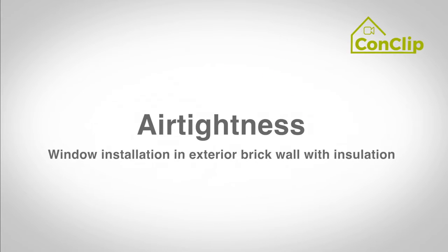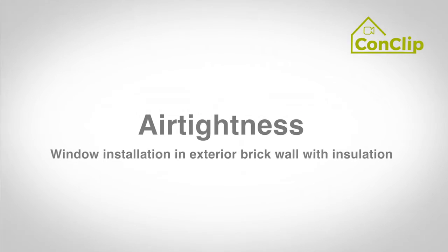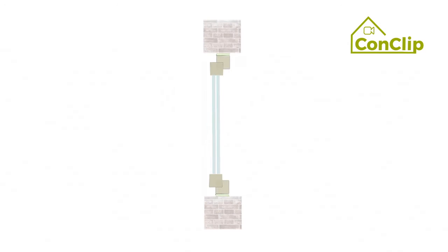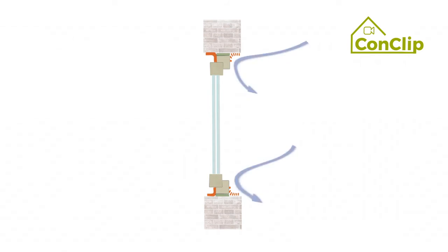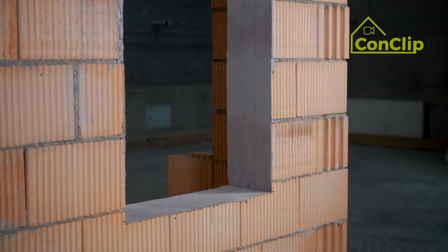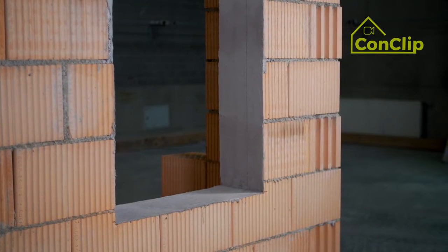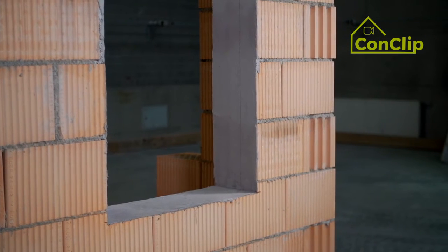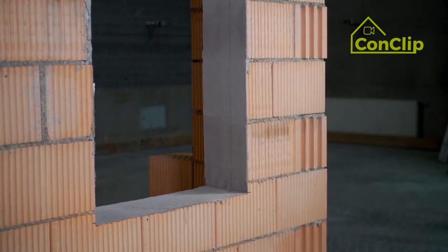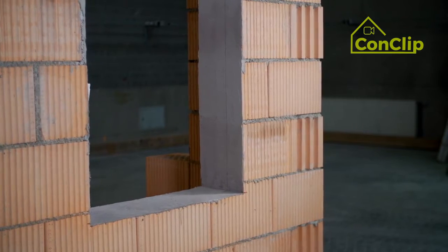Air tightness: window installation in exterior brick wall with insulation. Air tightness means that heated air from inside a building cannot escape and cool air cannot get into the building. Properly installed windows and also doors are essential to keep a building airtight.